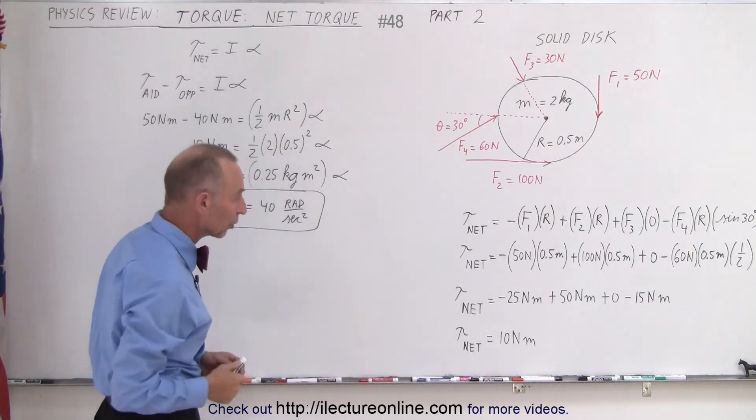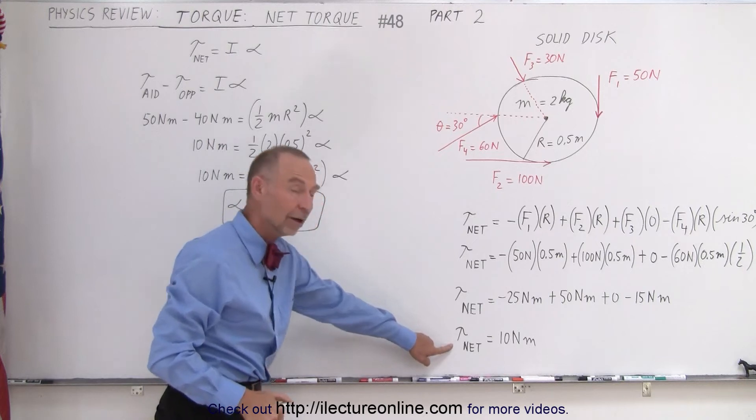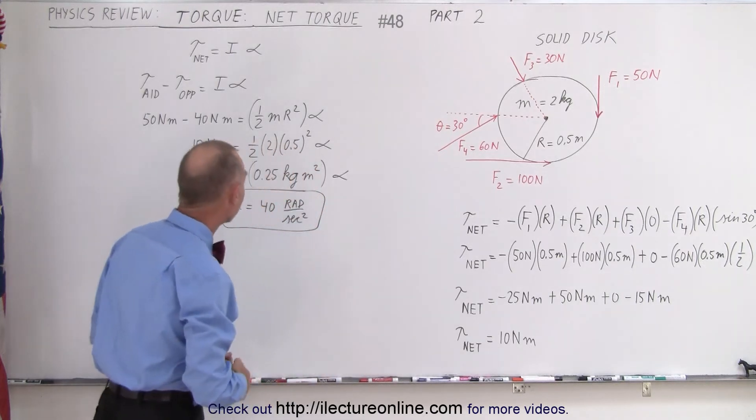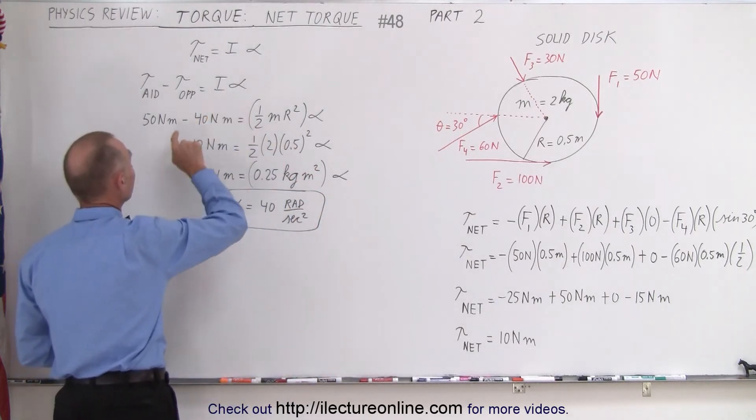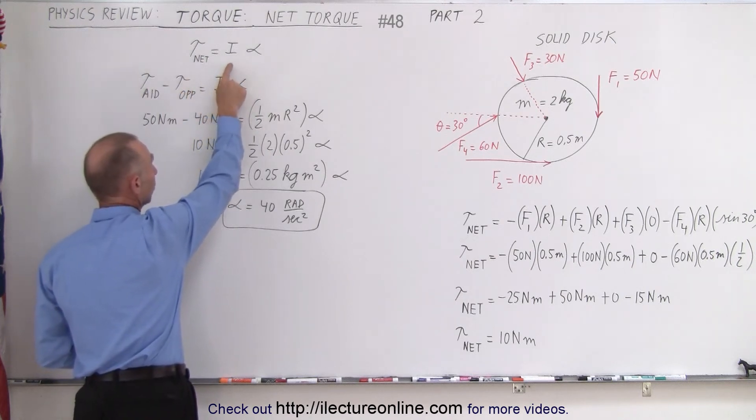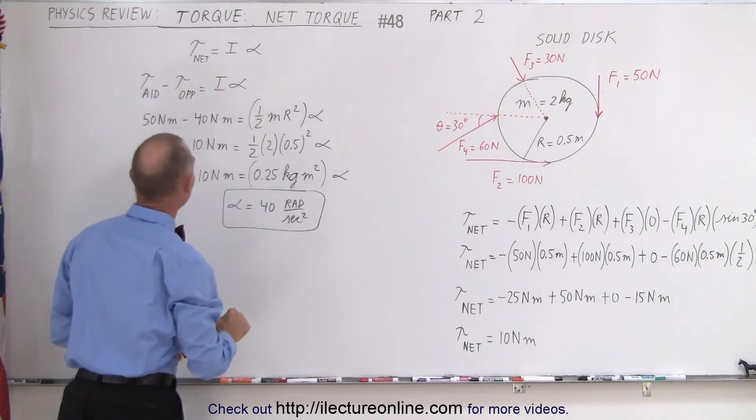So you can see now you can add up all the torques, and we end up with a net torque of 10 Nm. Then we plug that into our equation here. Notice that the net torque is the moment of inertia of a rotating object times the angular acceleration.